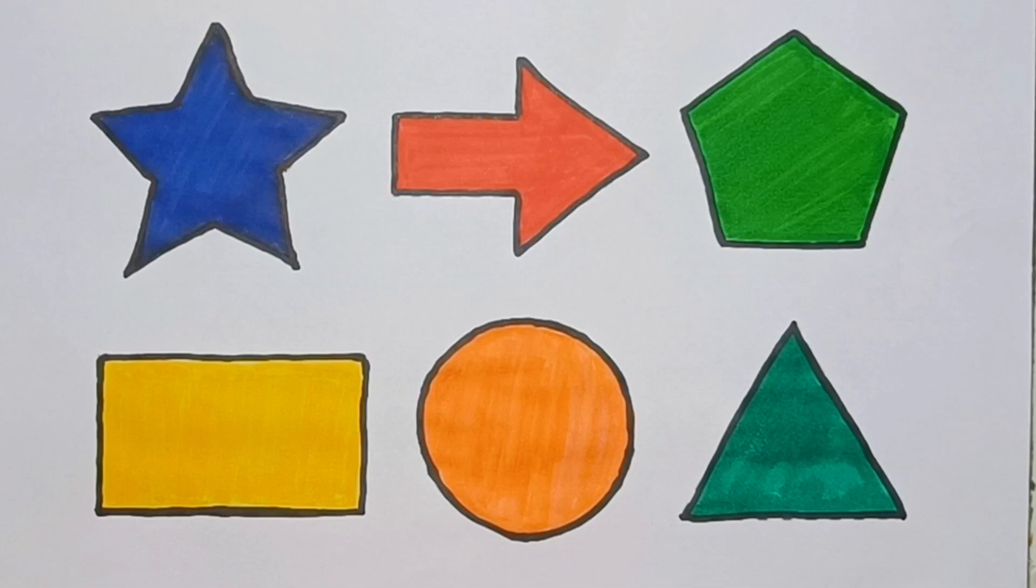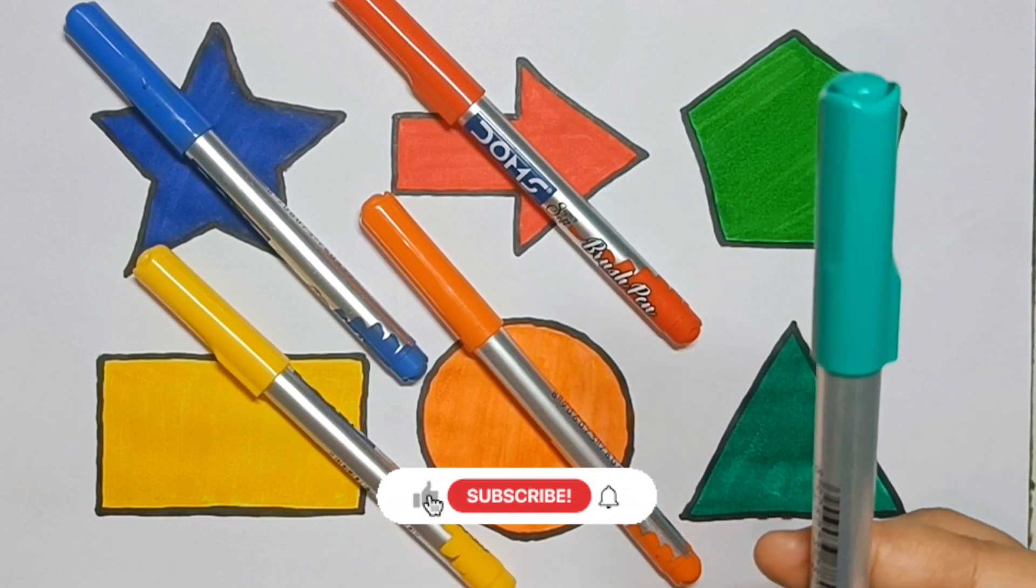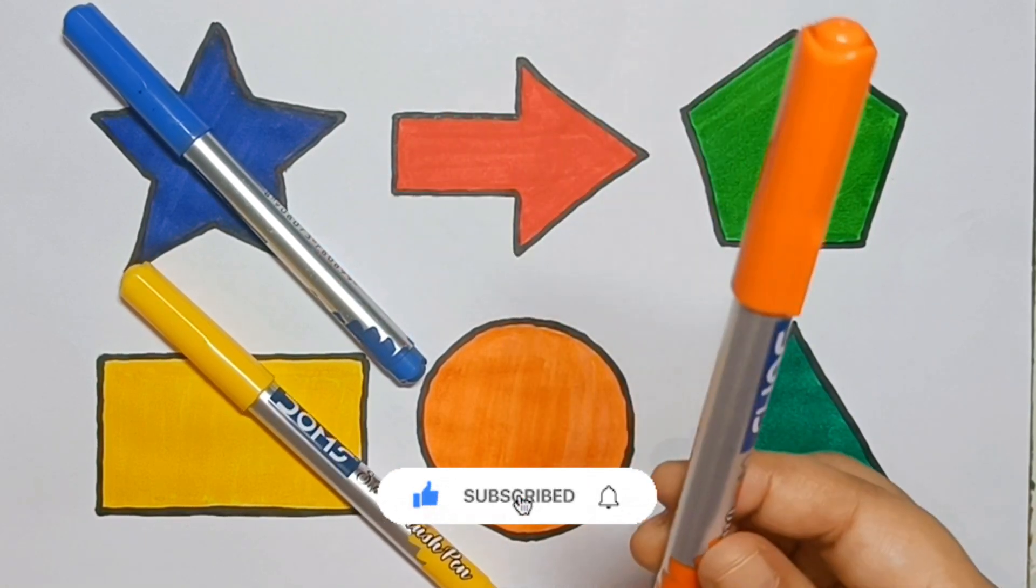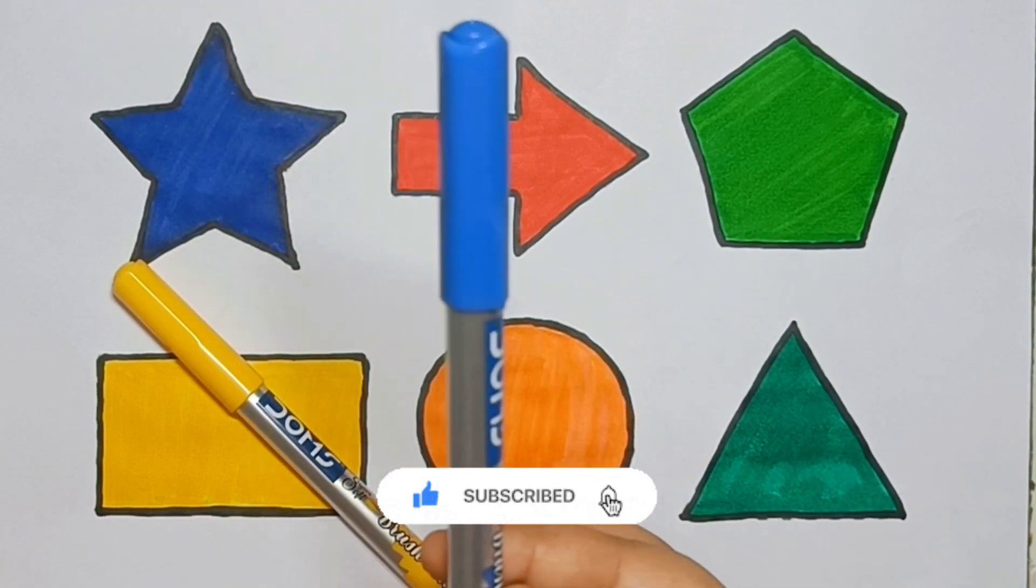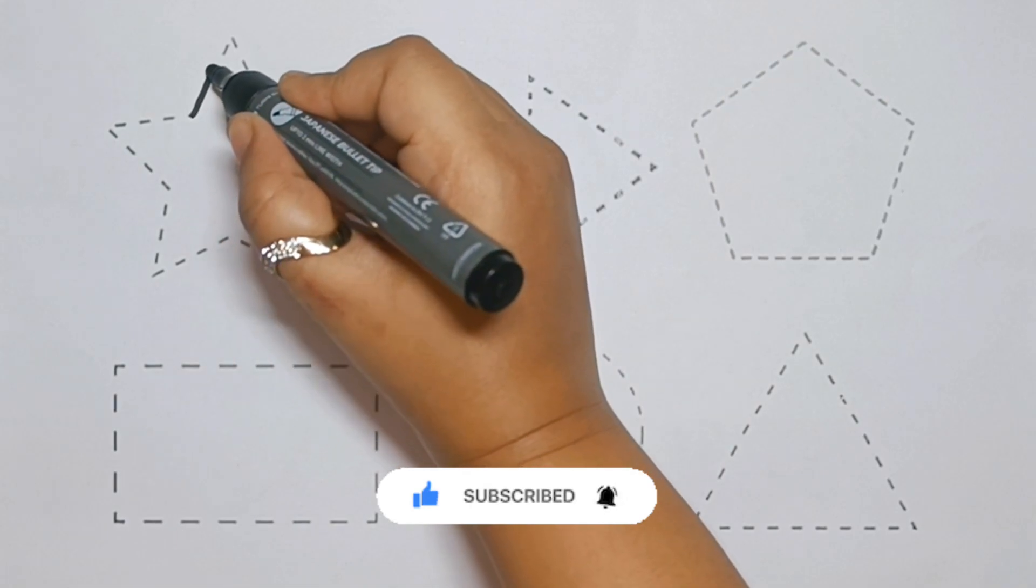Hello kids, how are you all? Let's learn the colors name. Green color, red color, orange color, blue color, yellow color. Let's learn to draw some shapes.